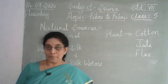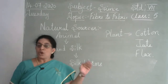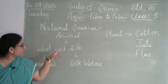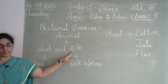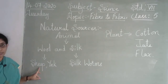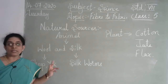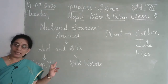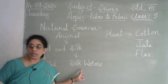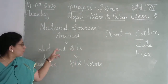In seventh standard we are going to read only about the animal sources of fiber — that is wool and silk. Wool is taken from different varieties of sheep, yak, and some varieties of camels. Silk is extracted only from the silkworm.